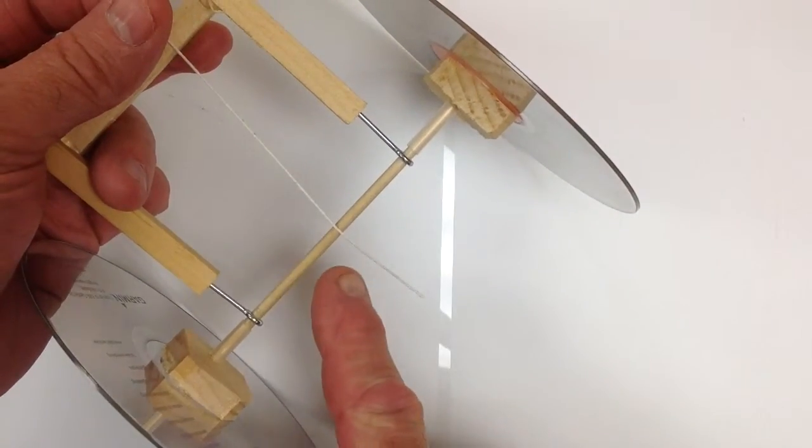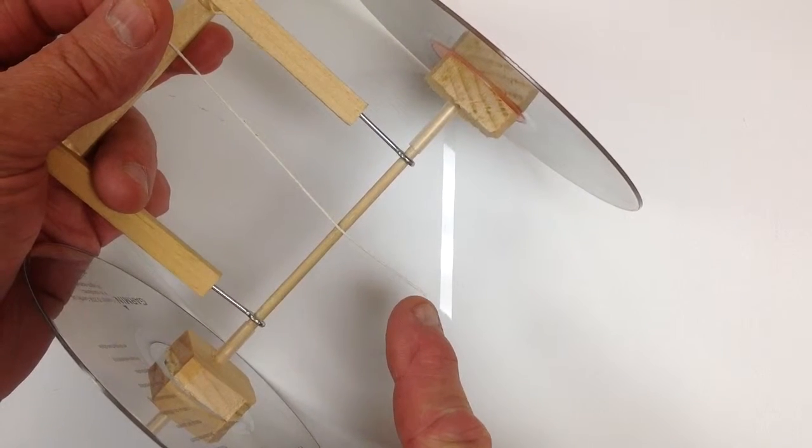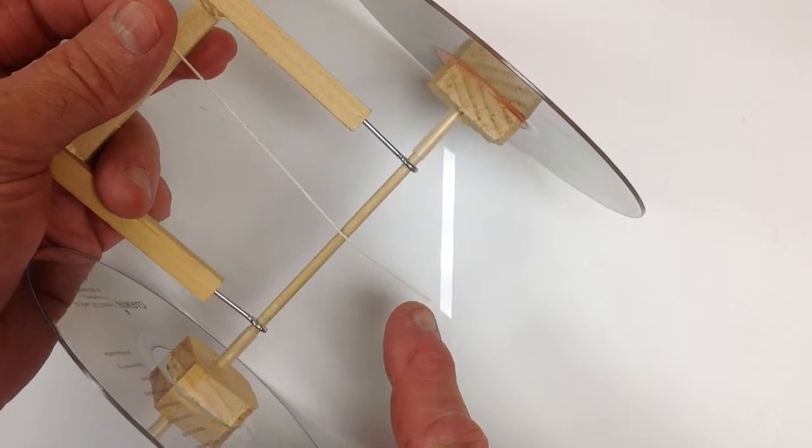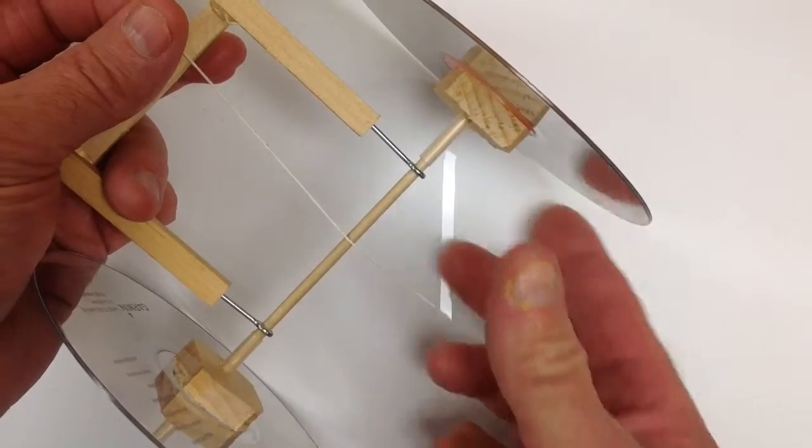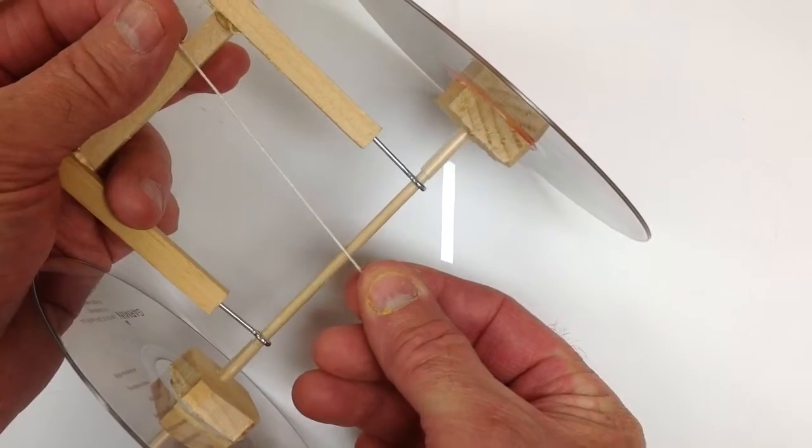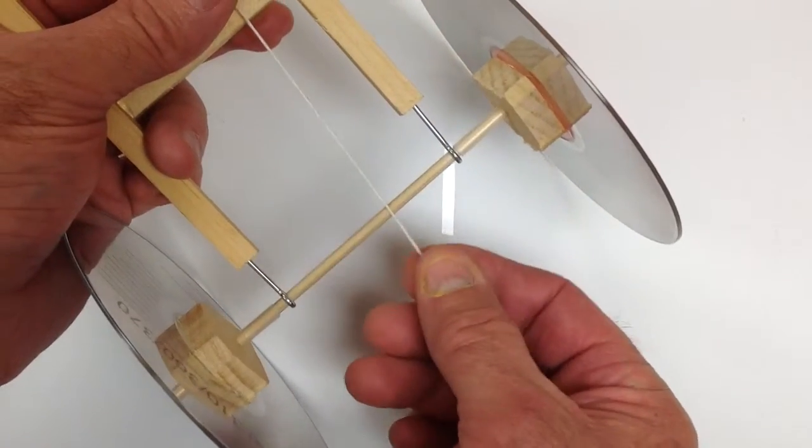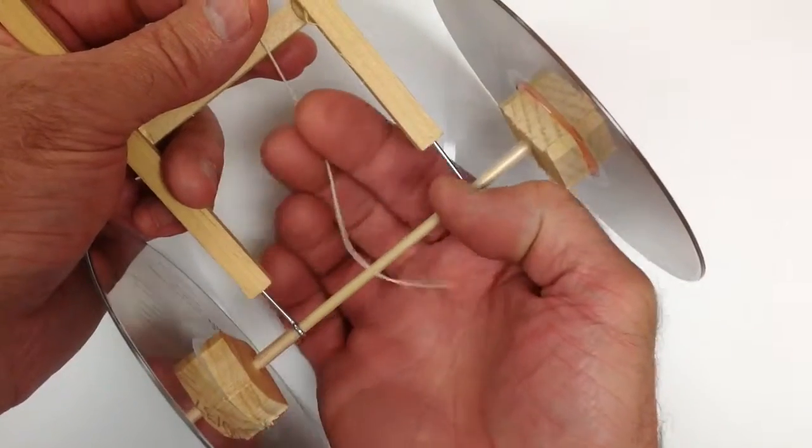You should cut the string so that you have no more than three-quarters of an inch extra. Take the string, and if you want your vehicle to go in that direction, you wrap the string over the top.